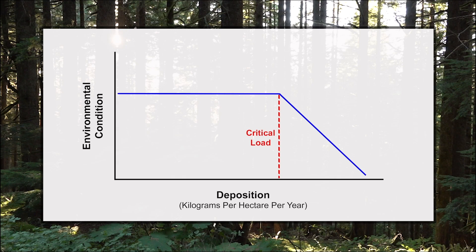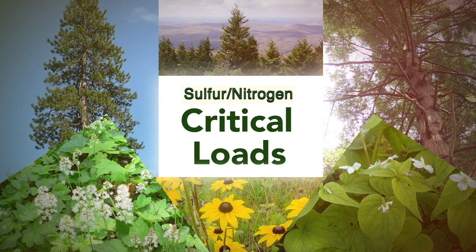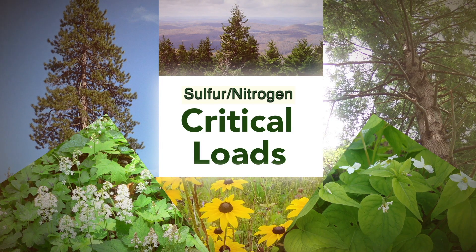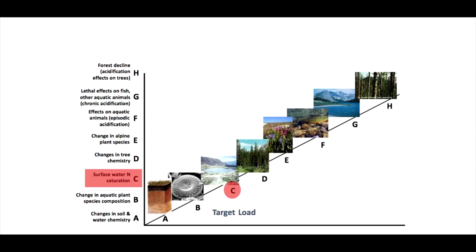When a critical load is reached or exceeded, ecosystem damage is expected to begin. There are different sulfur and nitrogen critical loads for different ecosystems and ecosystem parts. For example, the critical load that maintains lake water quality for fish is different from the critical load that maintains soil nutrients for forests.